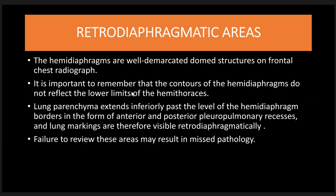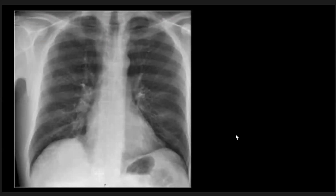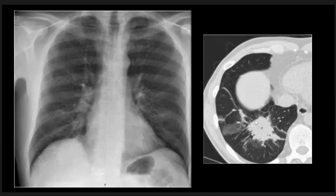The retrodiaphragmatic area: lung tissue is seen below the diaphragm and we should not miss pathology in this area. Here, this patient has density below the right hemidiaphragm, and the CT scan confirms a mass lesion in the right lower lobe due to lung cancer.